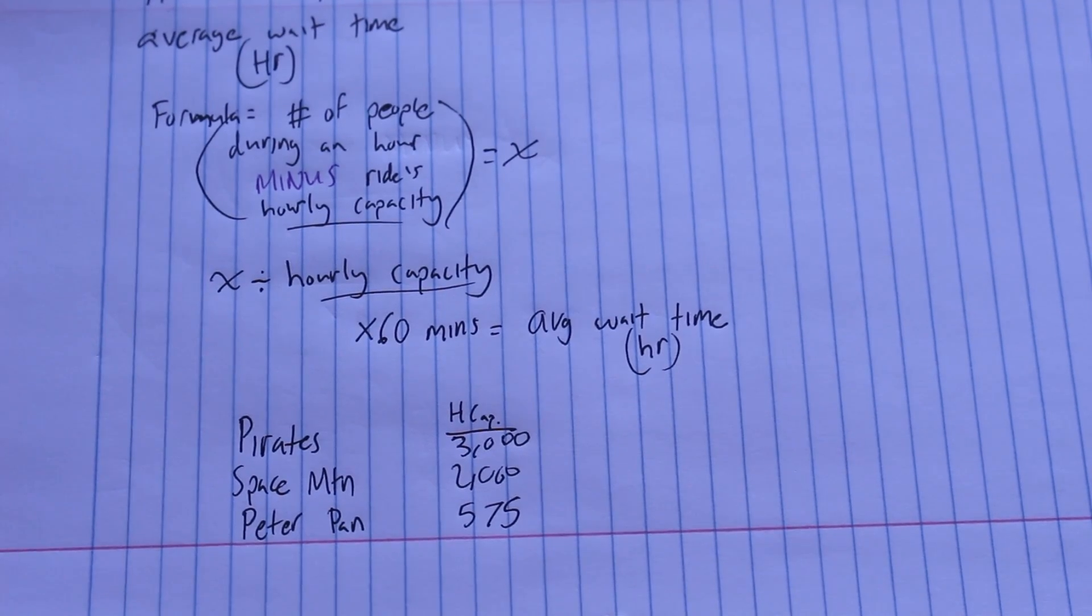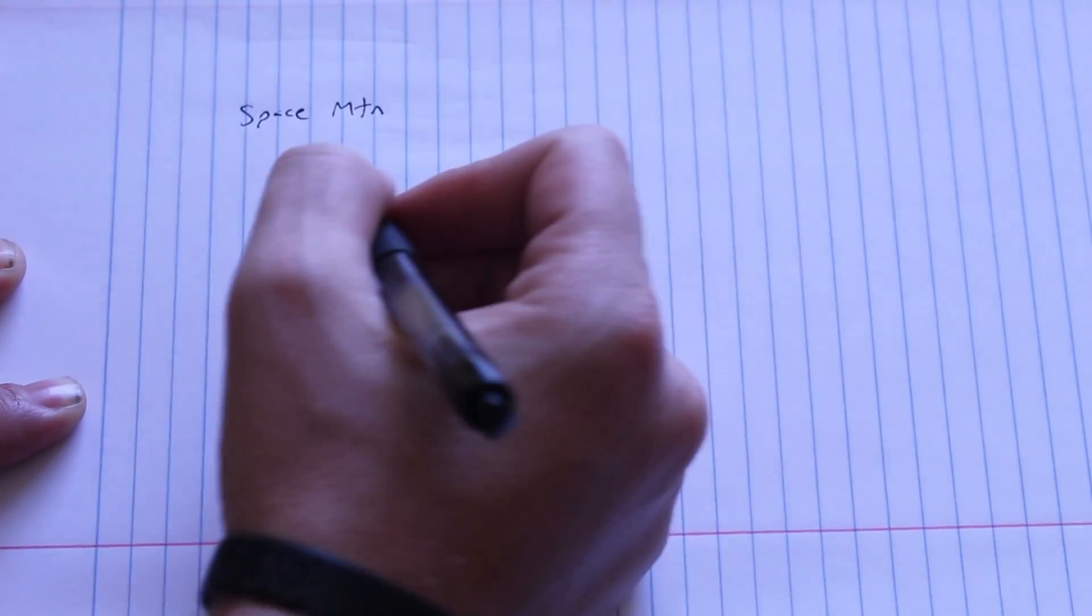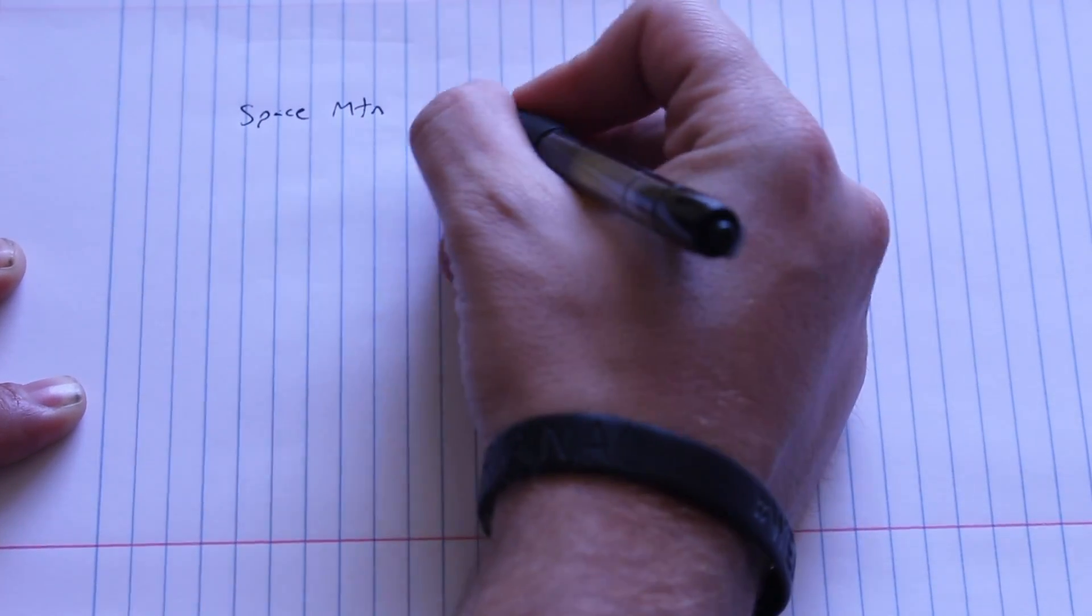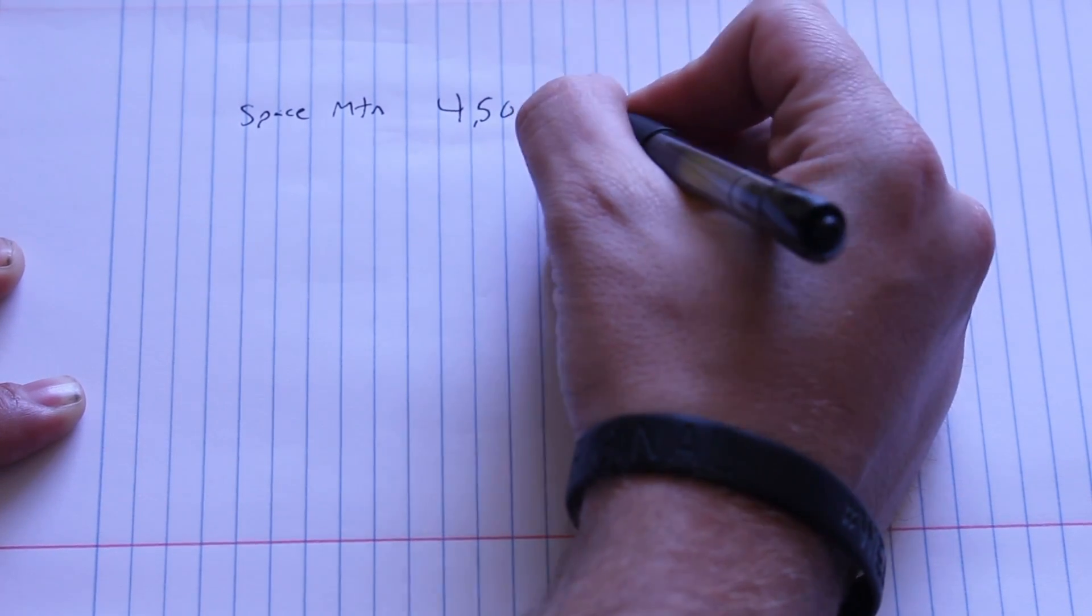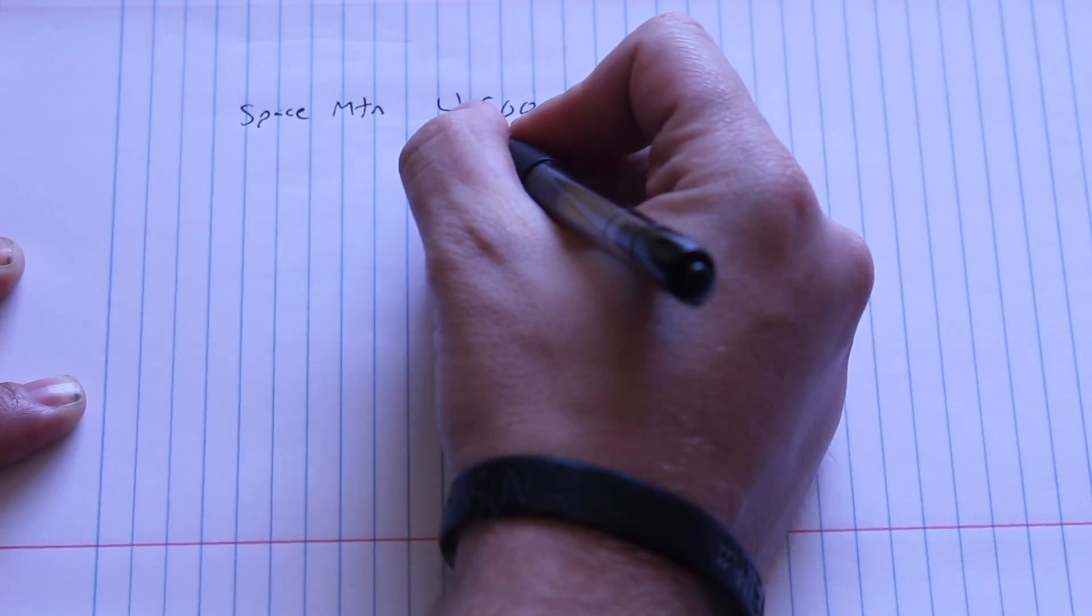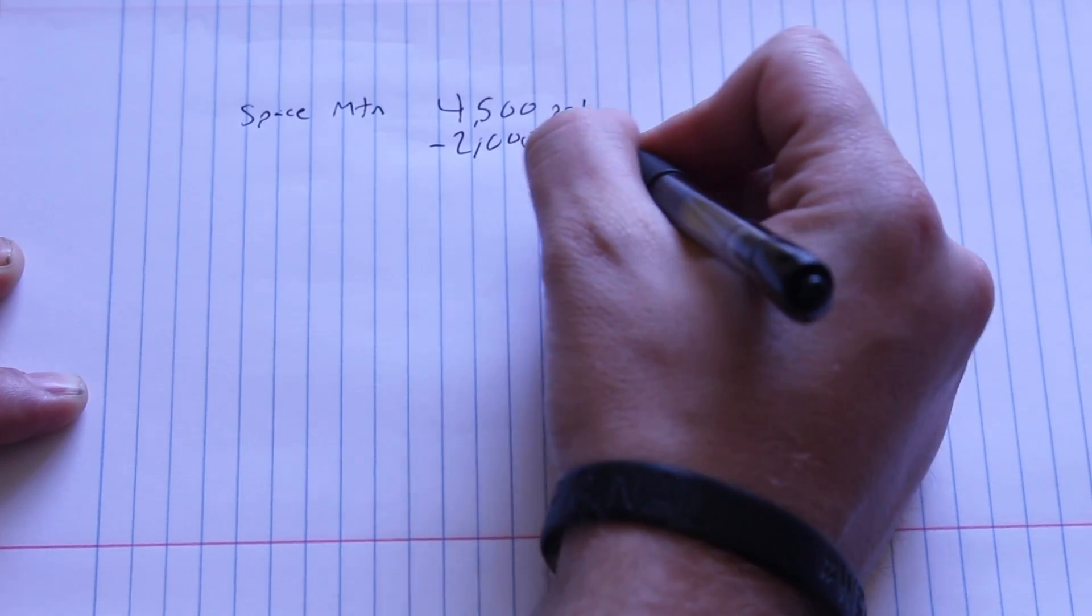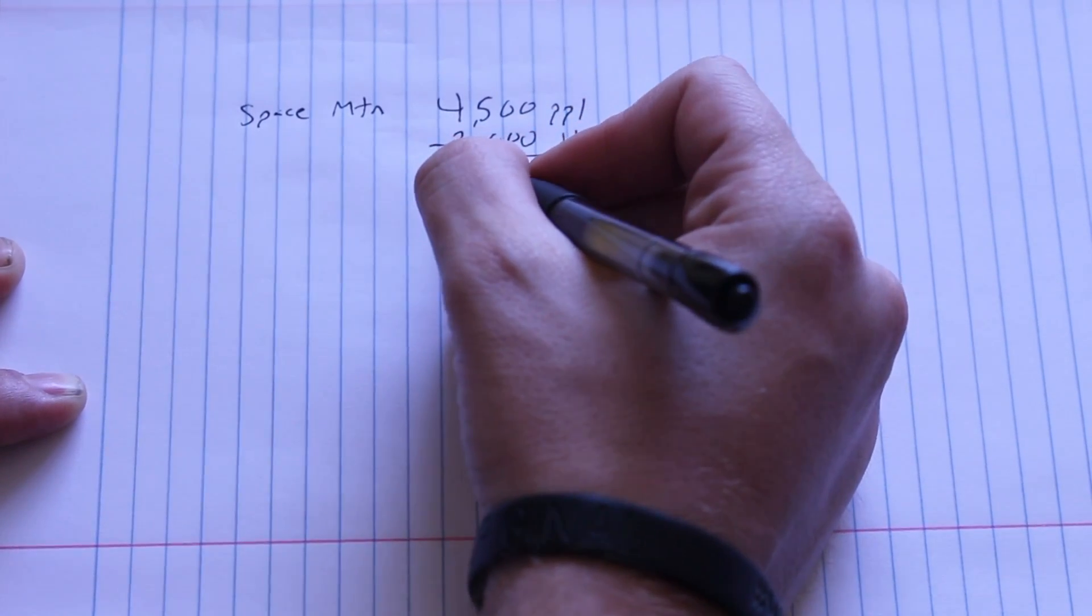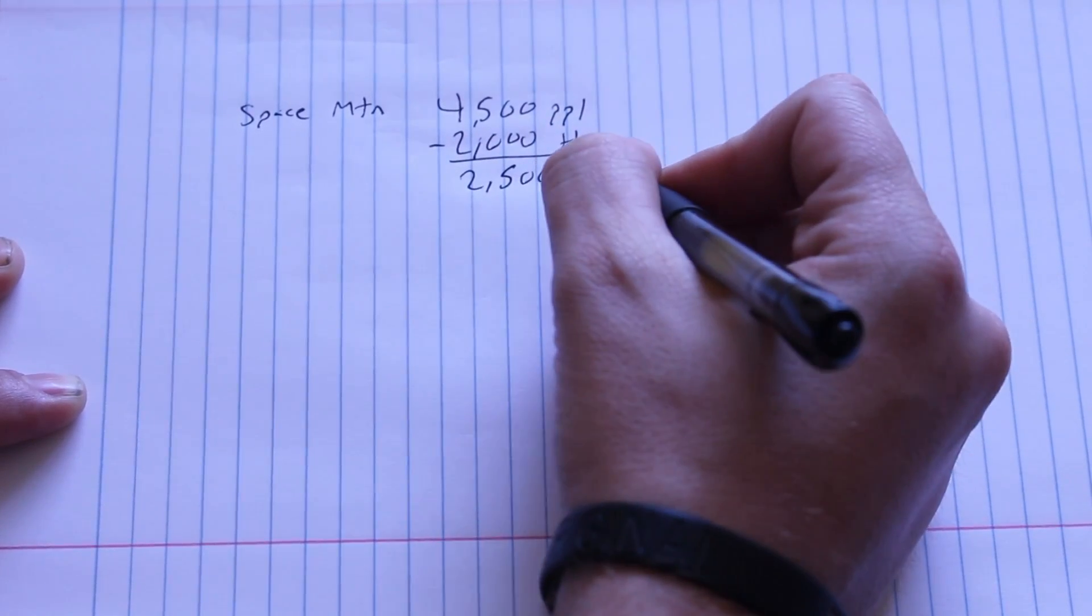Let's do some examples. Let's take a ride like Space Mountain. Now we know that Space Mountain has an hourly capacity of 2,000 people. But if 4,500 people want to ride it in one hour, we need to take this number and subtract the hourly capacity from it.